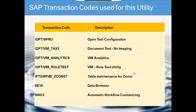Last but not least is SWI3, automatic workflow customizing, which is very important — without it VIM will not work. As discussed, VIM works mostly through workflows, and if the workflow configuration is not done properly, the Vendor Invoice Management process will never work. These are the seven transactions which are very important for Vendor Invoice Management configuration.